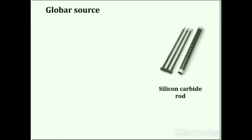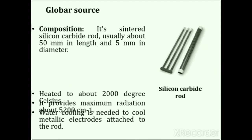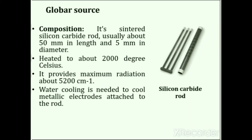Next is the Globar source, composed of a rod of silicon carbide about 50 mm in length and 5 mm in diameter. When heated to about 2000°C it provides radiation, with maximum radiation within the range of about 5200 cm⁻¹. The power consumption is normally higher than that of the Nernst glower, and water cooling is needed to cool the metallic electrodes attached to the rod. The Globar source is less convenient to use, more expensive and less intense than the Nernst glower.